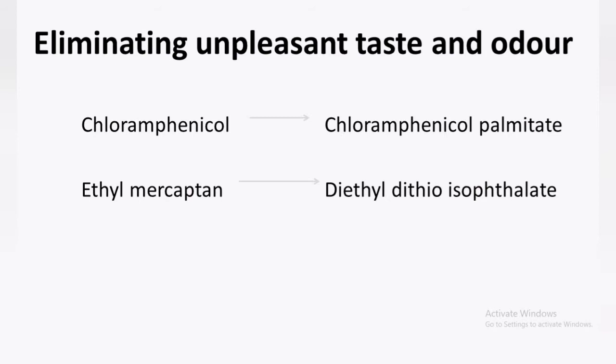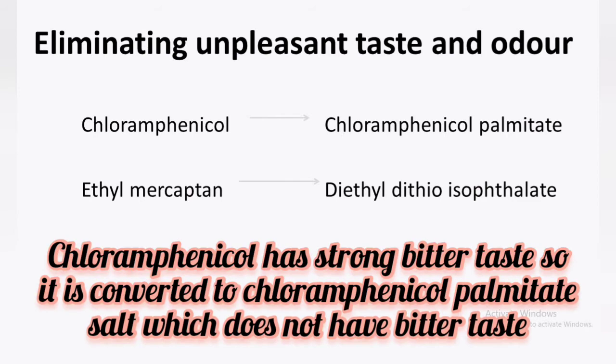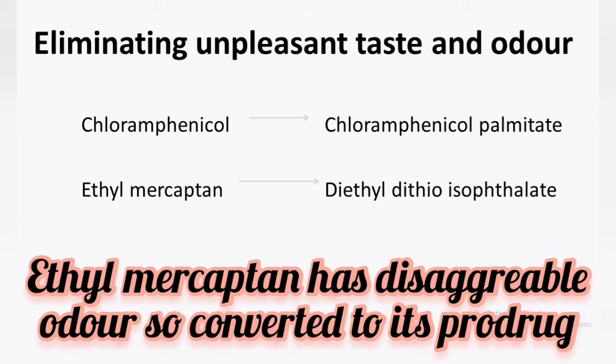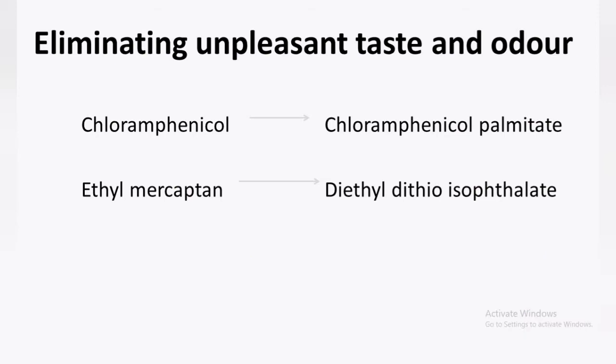The next reason for preparing Pro-drugs is to eliminate unpleasant taste and odor. If there is unpleasant taste and odor in any chemical, it is hard to prepare an oral dosage form. So it is important to mask the taste and odor of such chemicals, which is possible by making a Pro-drug. For example, Chloramphenicol palmitate is a Pro-drug of Chloramphenicol, which gets hydrolyzed by pancreatic lipase to form active Chloramphenicol, used for its potent antibacterial activity. Ethyl mercaptan has a low boiling point of 25°C and a strong disagreeable odor, so the Pro-drug diethyl disulfide, which has a higher boiling point and no odor, is formed and is easy to prepare in other dosage forms.